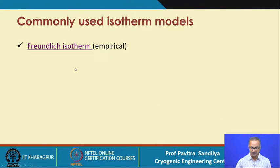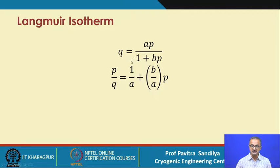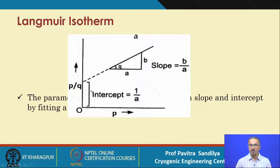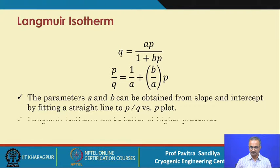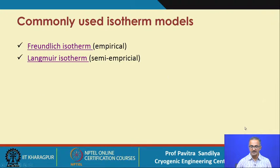Another popular model is the Langmuir isotherm, which is semi-empirical. Rearranging the Langmuir equation, p/q becomes a linear function of p. Plotting p/q versus p and doing regression to fit a linear curve through the experimental points gives a slope of b/a and an intercept of 1/a, from which we can figure out the values of a and b for the Langmuir isotherm. The Langmuir isotherm has been found to work better at higher pressures.